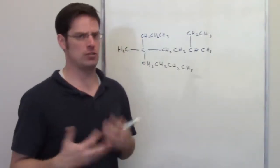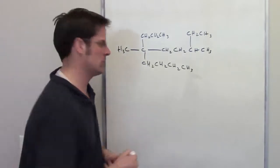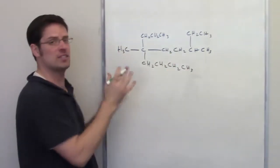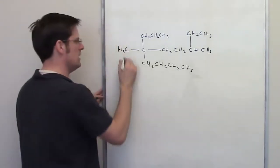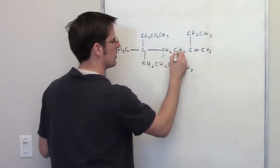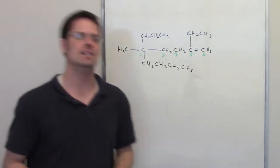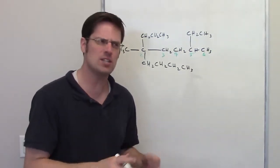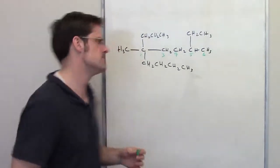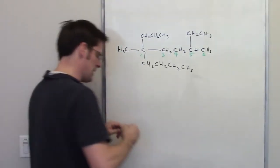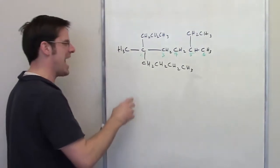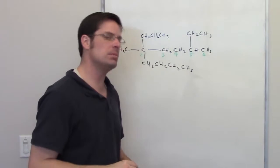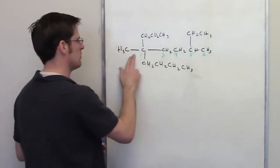Now one thing we might be tempted to do as English speakers is to just look at the one right along the horizontal line and go left to right, 1, 2, 3, 4, 5, 6, and call that the parent chain. Now that would be fine if that were the longest chain, but is it the longest chain? Well, keeping in mind that I don't necessarily have to go left to right, and I could go along any of the chains in any direction that I wanted, it probably isn't the longest chain.